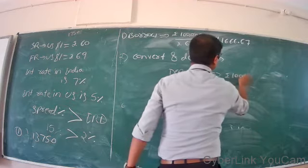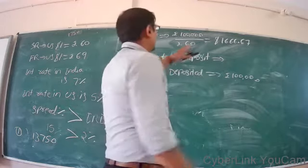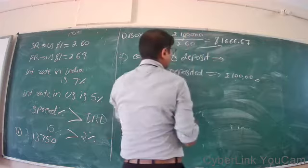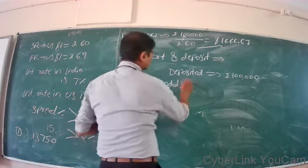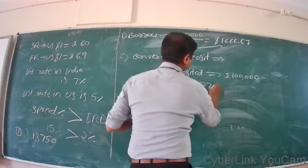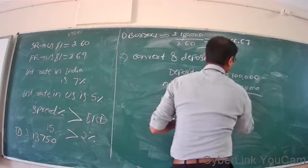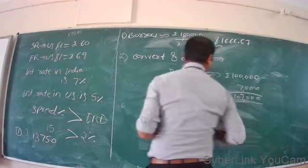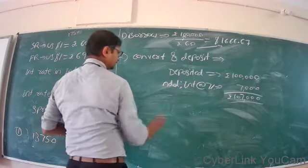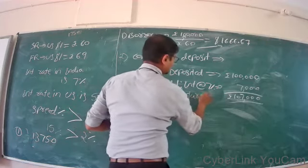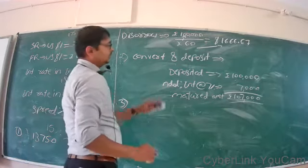The deposited amount in India is Rs. 1,00,000 after converting $1,666.67 at the spot rate. He has deposited Rs. 1,00,000 in an Indian bank. India offers an interest rate of 7%, so interest earned = Rs. 7,000. The matured amount after 1 year = Rs. 1,07,000.